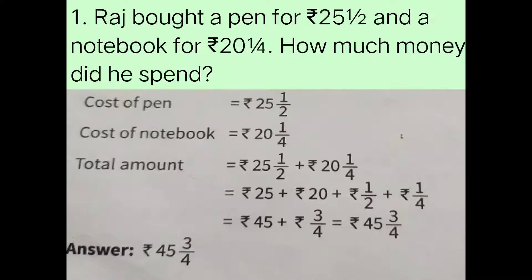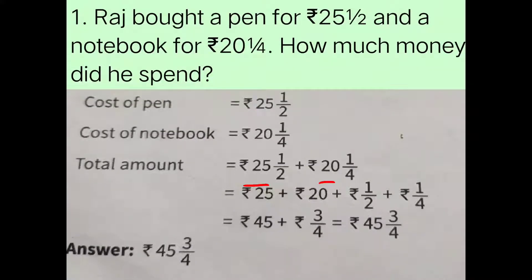These numbers are given in mixed fractions. Now we are going to change them. First we take the whole number parts separately — here it is 25 and here it is 20 — so we write rupees 25 plus rupees 20. Then we take the fraction parts separately, which gives us 1/2 plus 1/4.